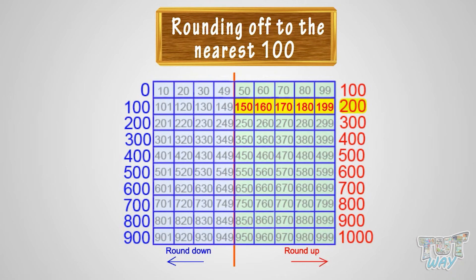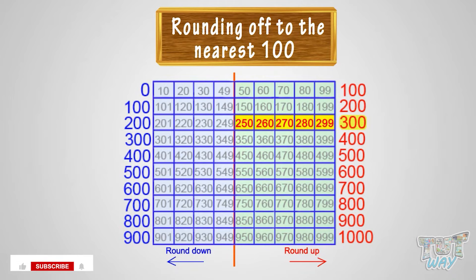So kids, we learned that in rounding off to the nearest 100, we round the number to the nearest 100 by rounding it down if it's below or before the 50 mark, and rounding it up if it's above or after the 50 mark.